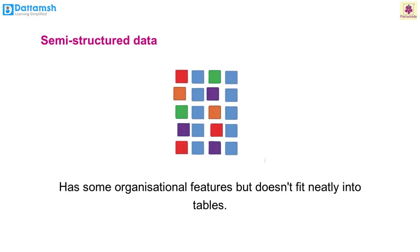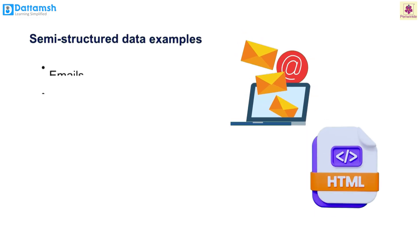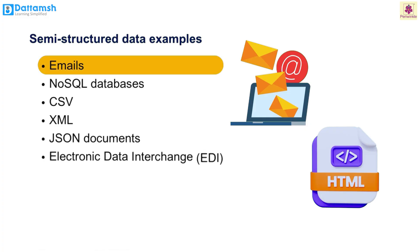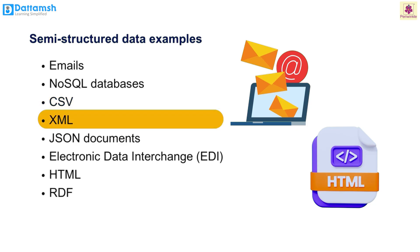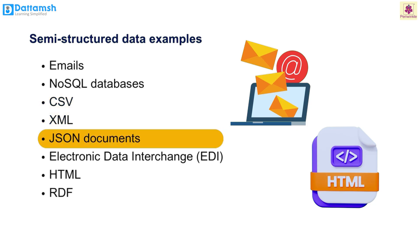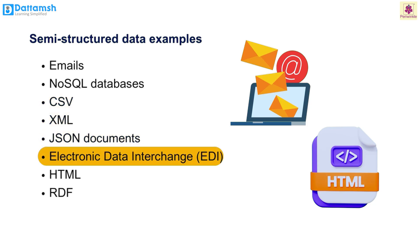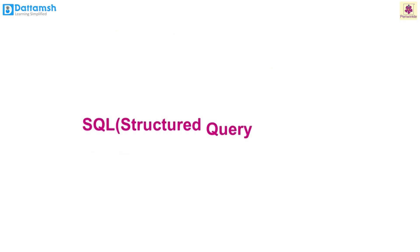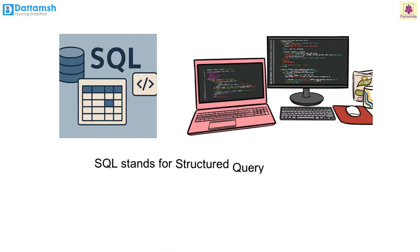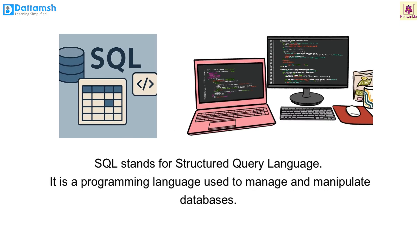Semi-structured data: it has some organizational features but doesn't fit neatly into tables. Examples include emails, NoSQL databases, CSV, XML, JSON documents, Electronic Data Exchange (EDI), HTML, and RDL.